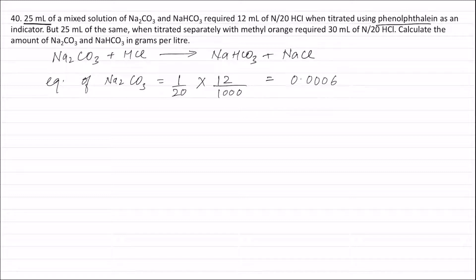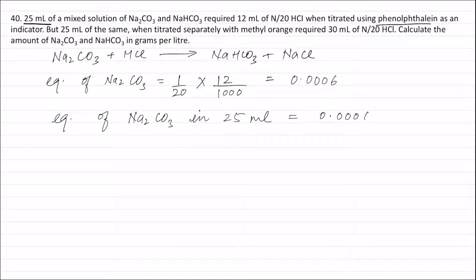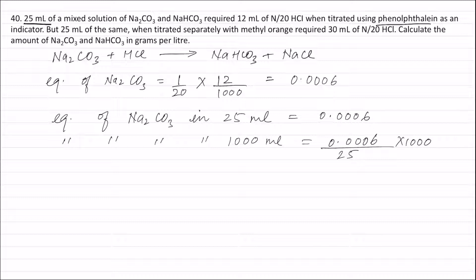This is the equivalent of sodium carbonate present in 25 ml of solution. Therefore, equivalence of sodium carbonate in 25 ml = 0.0006 equivalence, and equivalence of sodium carbonate in 1000 ml = 0.0006 ÷ 25 × 1000 equivalence.